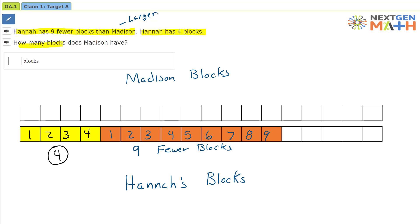So how many blocks does Madison have? Madison's blocks are going to be equal to the four of Hannah's and the nine fewer. So let's count those. One, two, three, four, five, six, seven, eight, nine, ten, eleven, twelve, thirteen. So four plus nine equals thirteen. These blocks in blue represents Madison's blocks. So Madison has thirteen blocks.